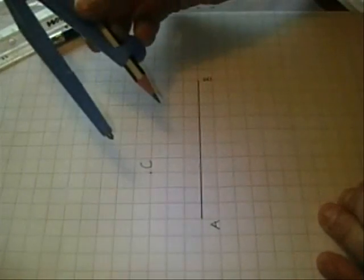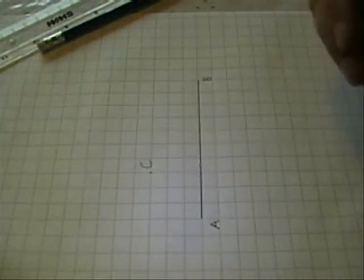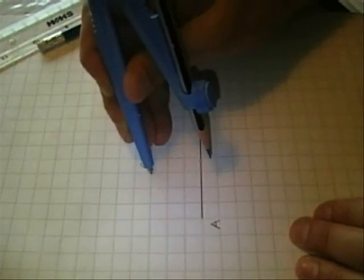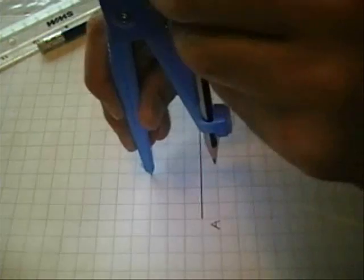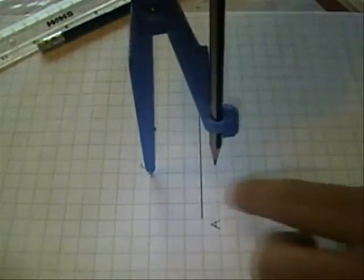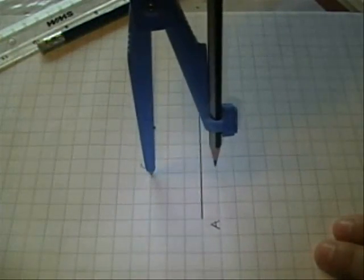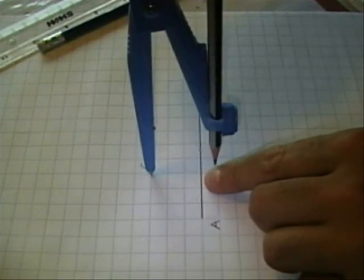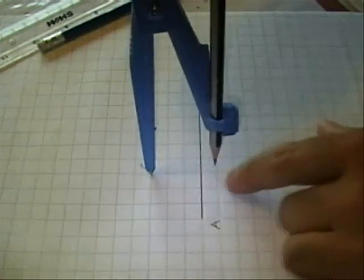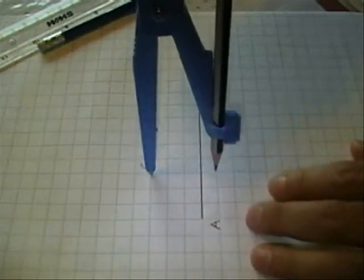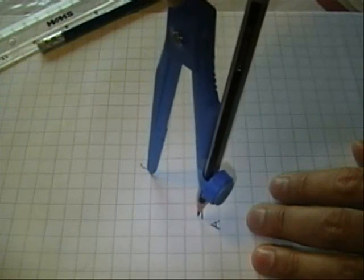So taking our compass, always use a sharp pencil, extending the aperture of the compass so that it goes past the distance from C to AB, this distance here. Simply draw an arc.